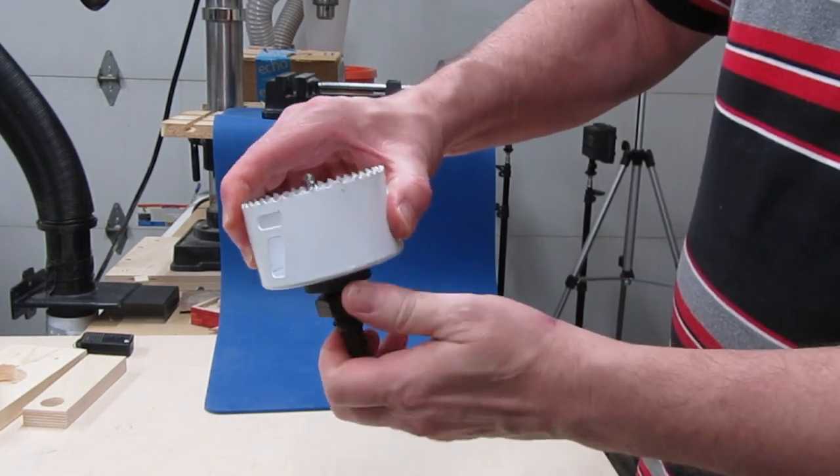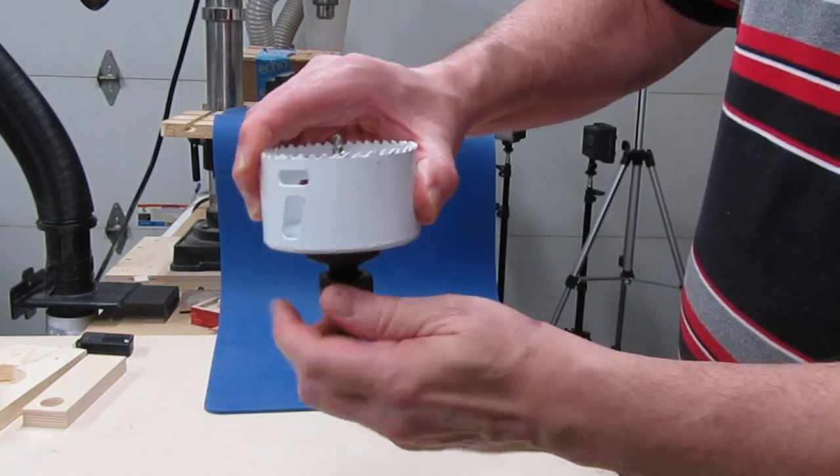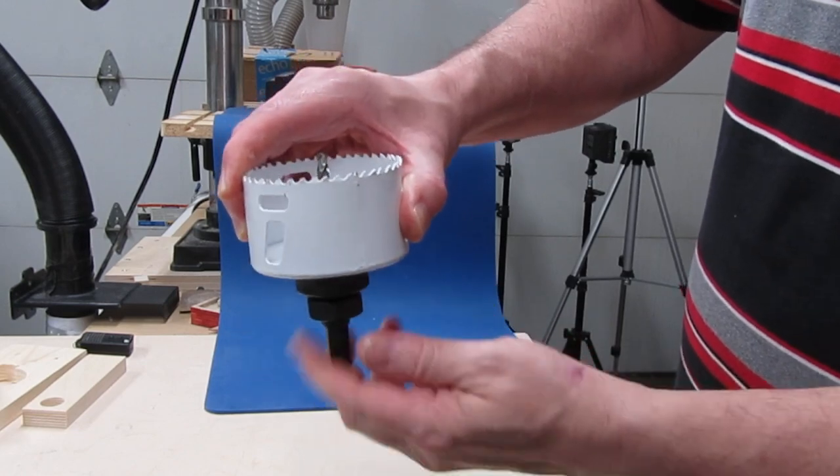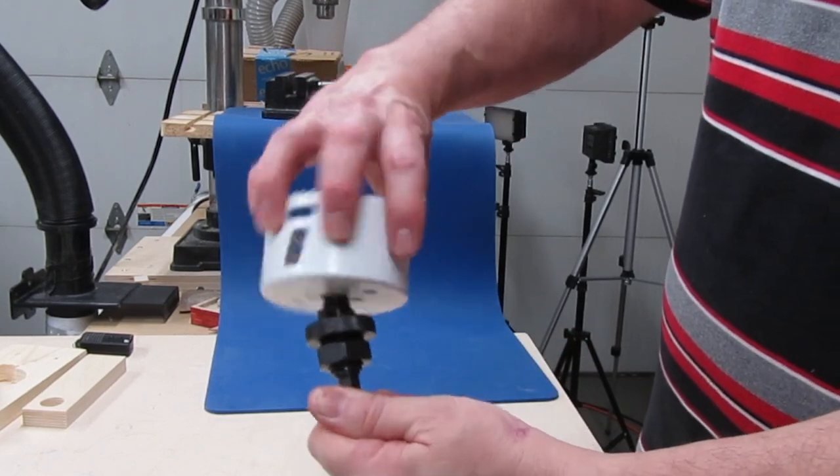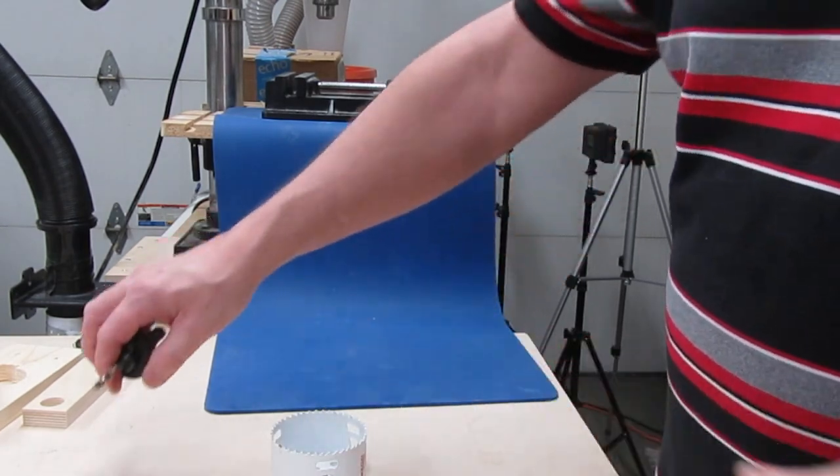When you're done drilling, just reverse the process. Unscrew the big nut, pull the platform down, and unscrew the hole saw. Simple as that. As I said, highly recommended.